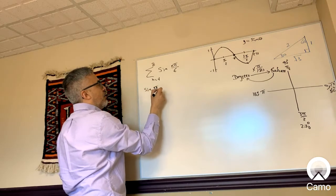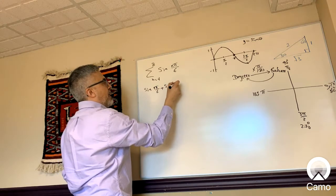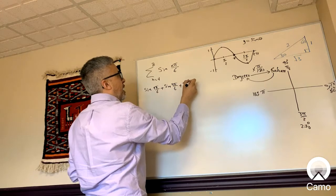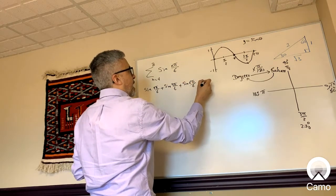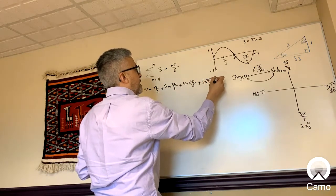This will give you sine 4π/6 plus sine 5π/6 plus sine 6π/6 plus sine 7π/6 and last sine 8π/6.